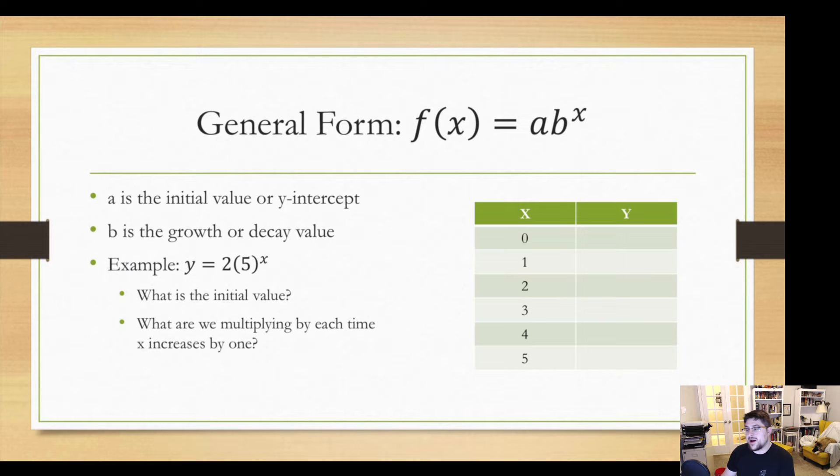Okay, let's talk about the general form of this stuff. Because while the parent function is b, the base to an x power, a lot of the times the way we'll actually see it is a times b to the x power, where the a is the initial value or the y-intercept. And then b is what we're multiplying by, our growth or our decay value. We'll worry about that growth and decay stuff in a second.